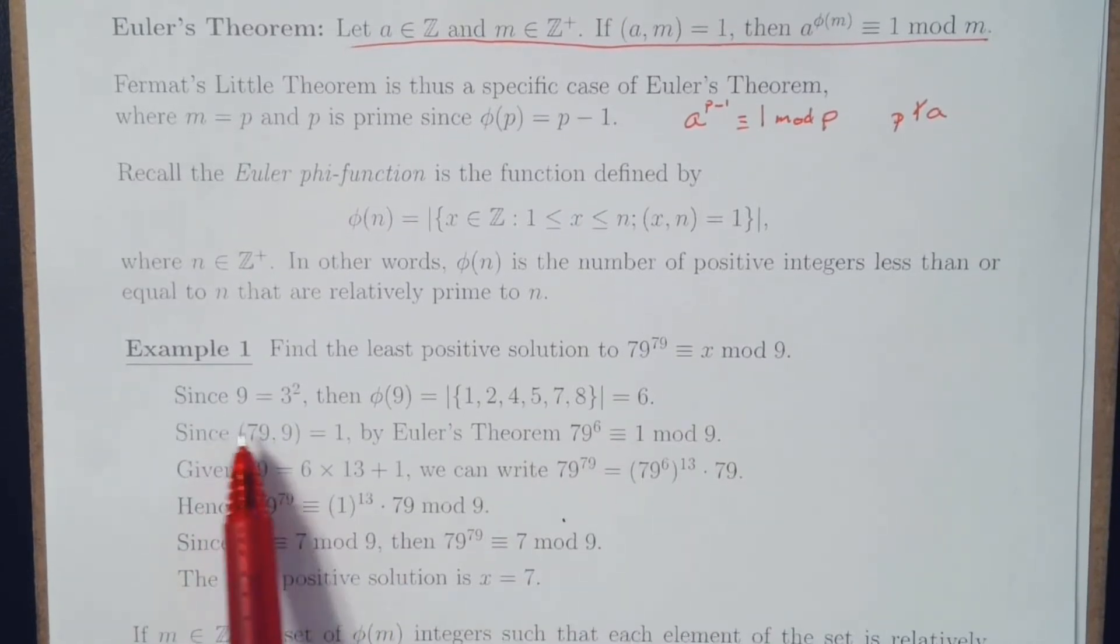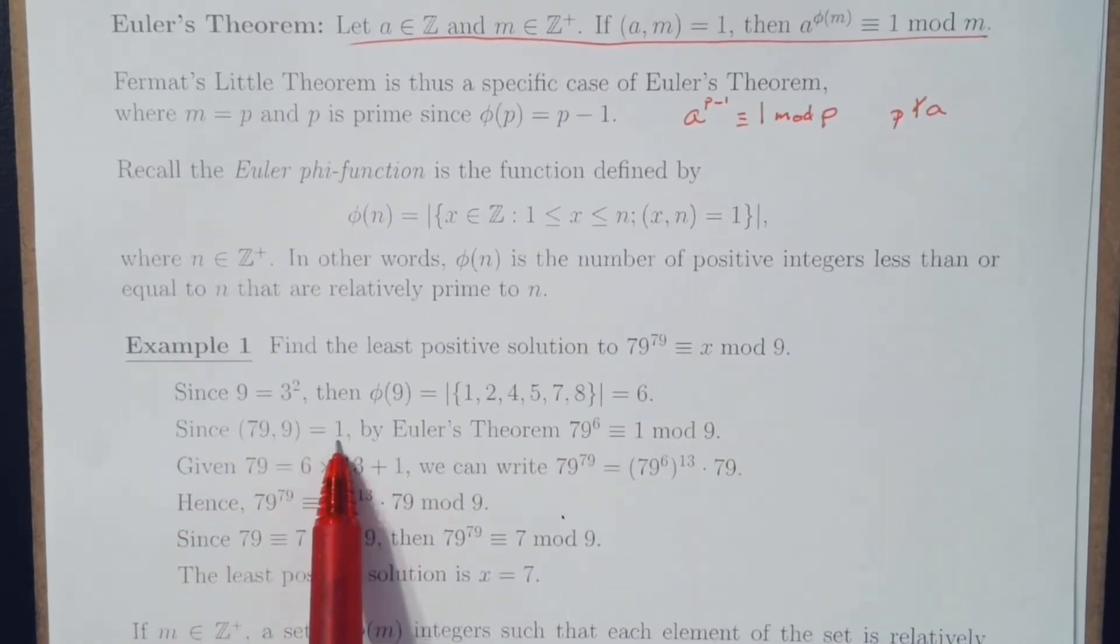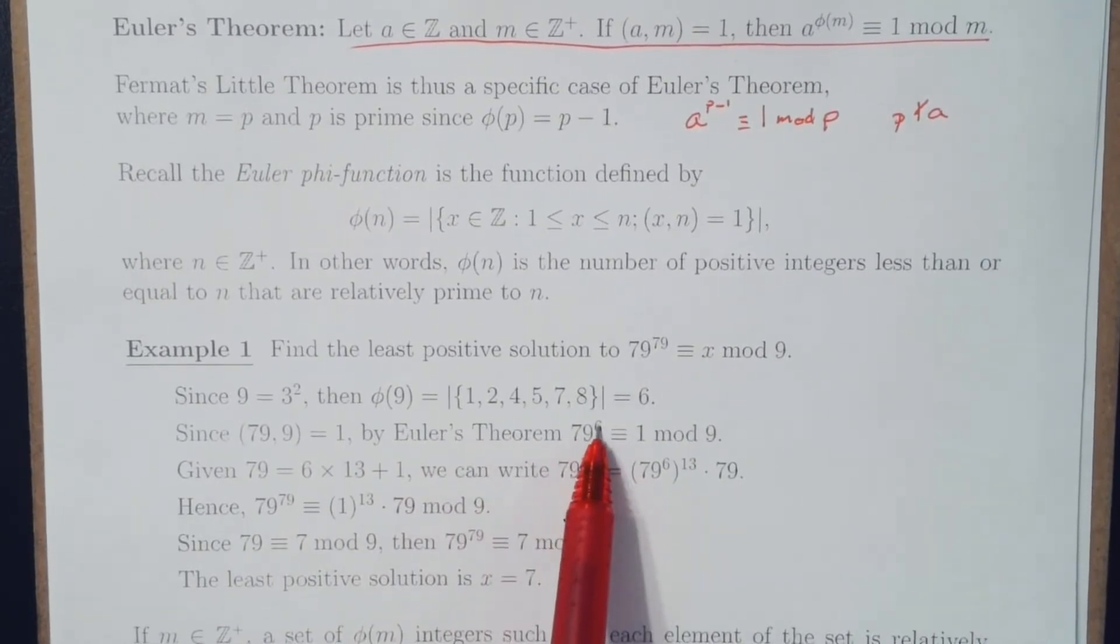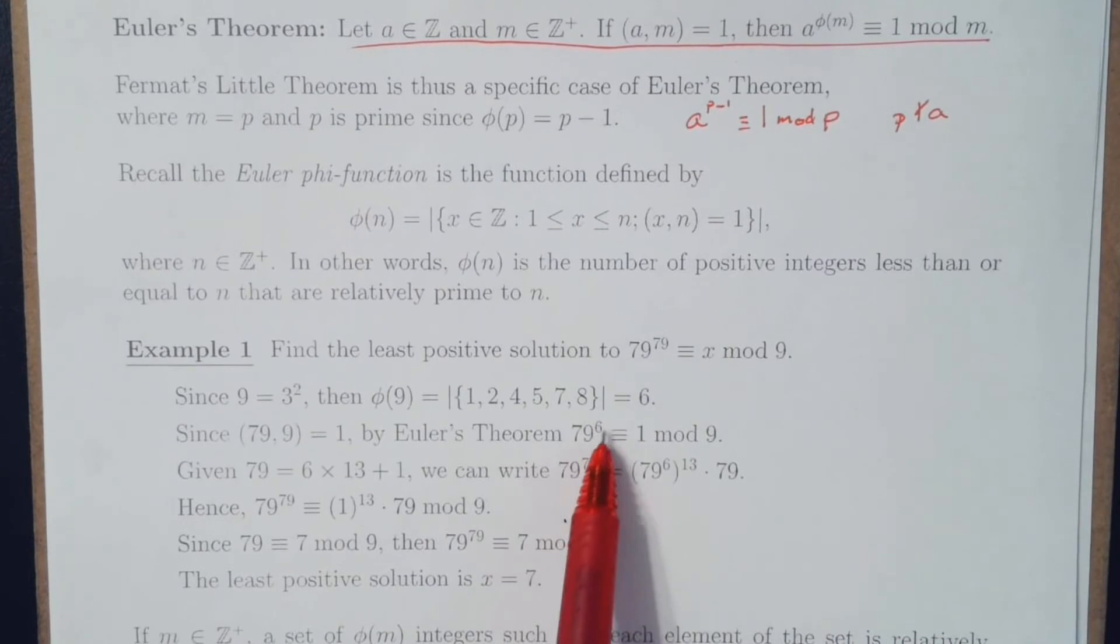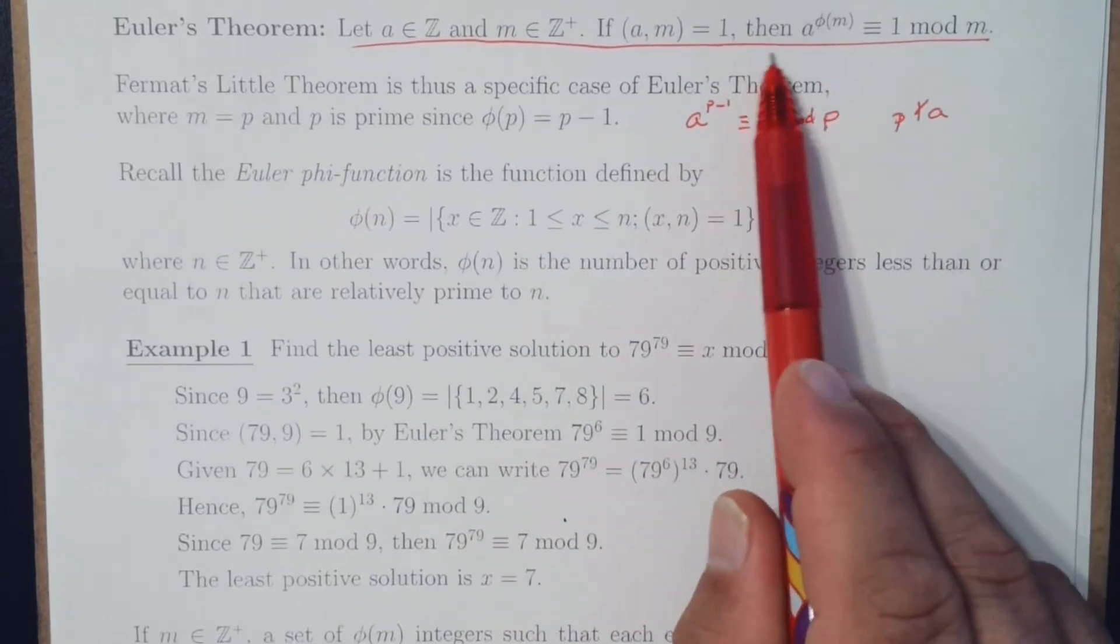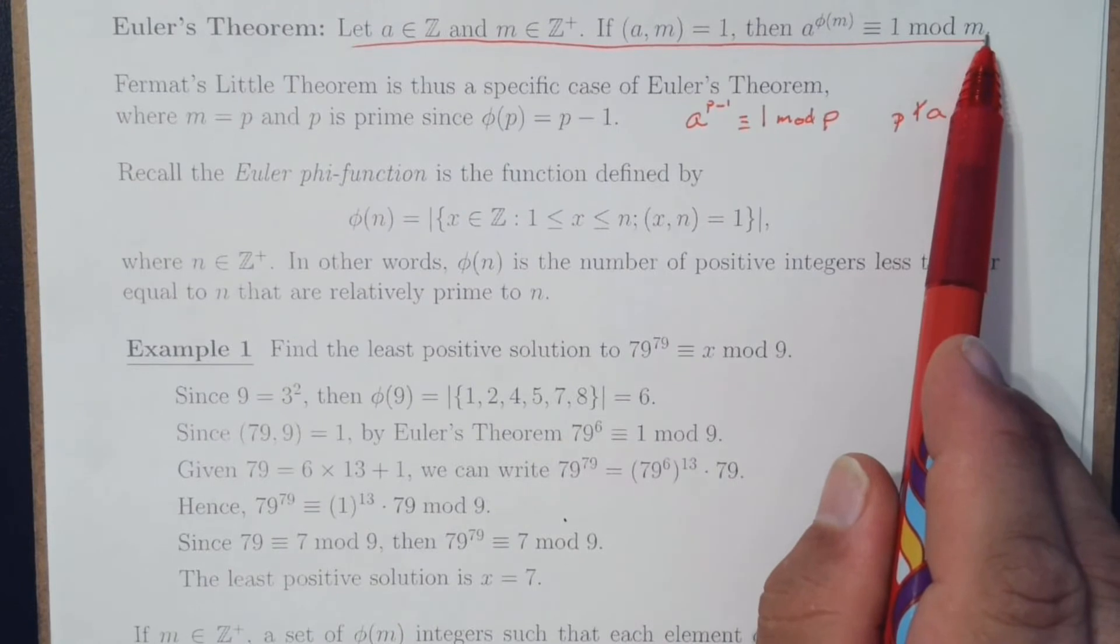Now, given that 79 and 9 are relatively prime, by Euler's Theorem, 79 to the sixth power is equivalent to 1 mod 9. That's what we're talking about right up here.